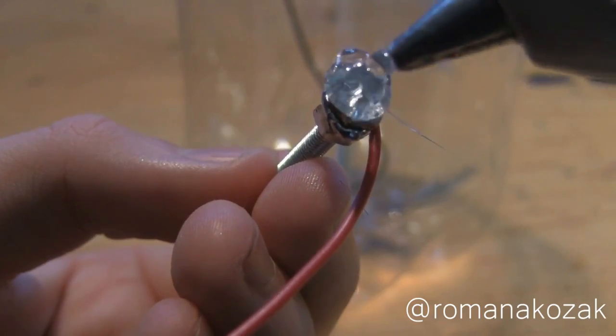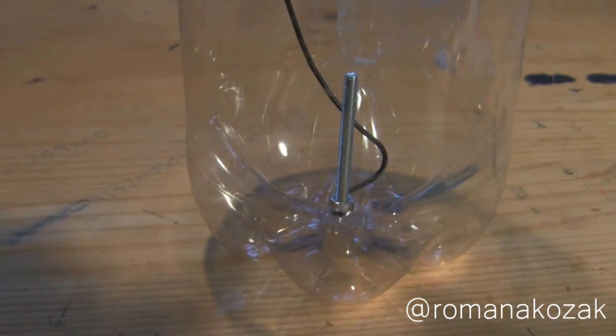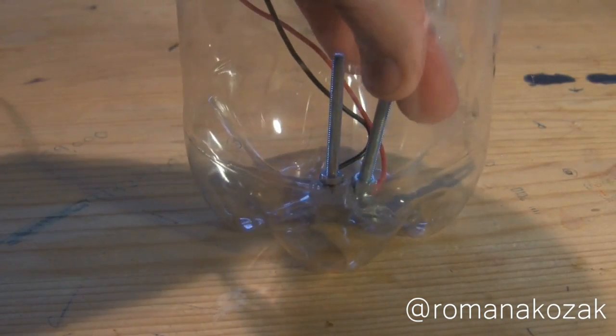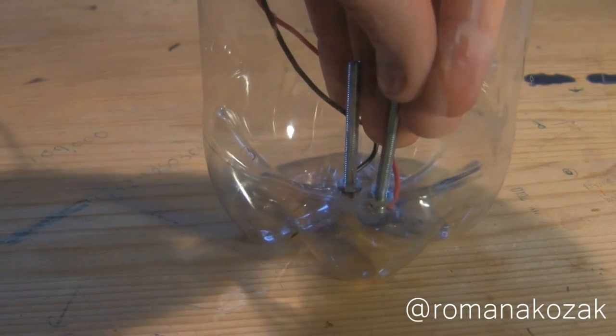Next put a generous amount of hot glue on the bottom of the red wire and screw and place in the water bottle about a centimeter away from the black wire and screw. This is our anode and it will be generating oxygen gas.